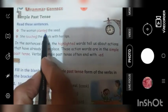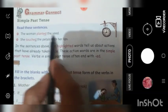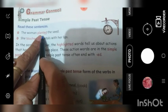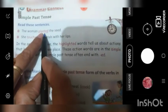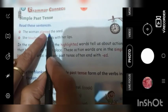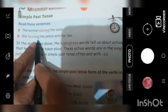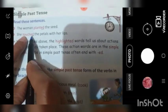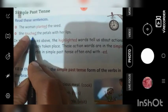The woman planted the seed. Plant ka matlab kya hai? Paudha bhi hai. But yehaan peh plant ka matlab hai bona. Lekin mehne plant ke aagay aapne dekha ED lagawa hai. Planted. She touched the petals with her lips. Touch means chuna. Lekin ED laga hai. Touched.